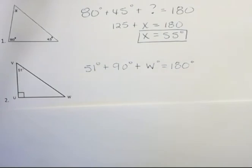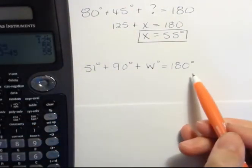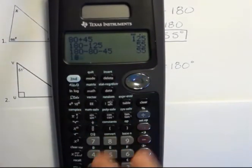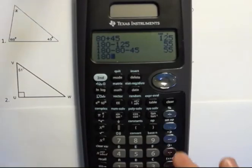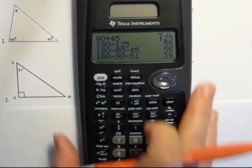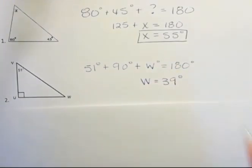And again, you can do that whichever way you want, add up the 51 and the 90 and then subtract it from 180 or subtract them one at a time. And I'm just going to subtract them one at a time. In this case, 180 minus 90 minus 51 is going to leave a 39 degree angle. So W equals 39 degrees. It's as simple as that.